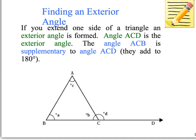There's something else we also need to understand about triangles: we can look at an exterior angle of a triangle, which is the angle on the outside of the triangle. If you extend one side of a triangle, that's when you find the exterior angle. So angle ACD is the exterior angle. Angle ACB is supplementary to angle ACD, meaning together they add to 180 degrees. So if you know the value of one of these, you can work out the value of the other one, because supplementary angles add to 180 degrees.